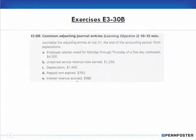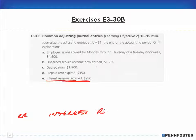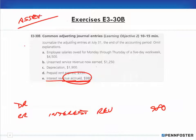Lastly, interest revenue accrued. Notice it's interest revenue and it's accrued — meaning we've earned it but haven't received the cash yet. Since revenues increase on the credit side, we credit interest revenue for $980. Debits have to equal credits, so we debit something else. Since I'm accruing it — meaning it's still owed to me — I own it, so I look under asset accounts and find an interest receivable account. We debit interest receivable for $980.